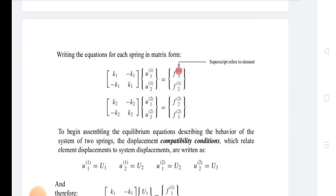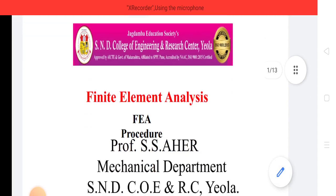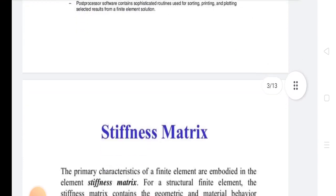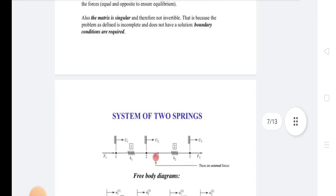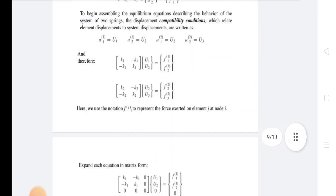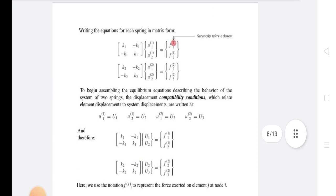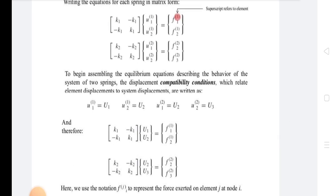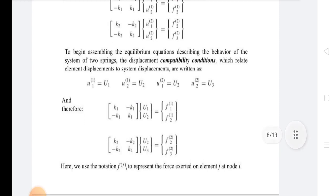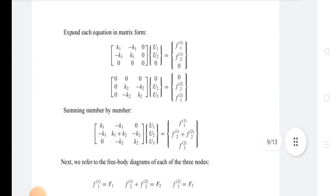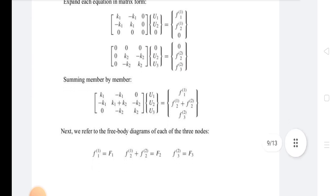The displacement compatibility conditions, which relate element displacements to system displacements, are written as: U1^1 equals U1, U2^1 equals U2, U1^2 equals U2, U2^2 equals U3. Expand each equation in matrix form: [[K1, -K1, 0], [-K1, K1, 0], [0, 0, 0]] times [U1, U2] equals [F1, F2, 0].